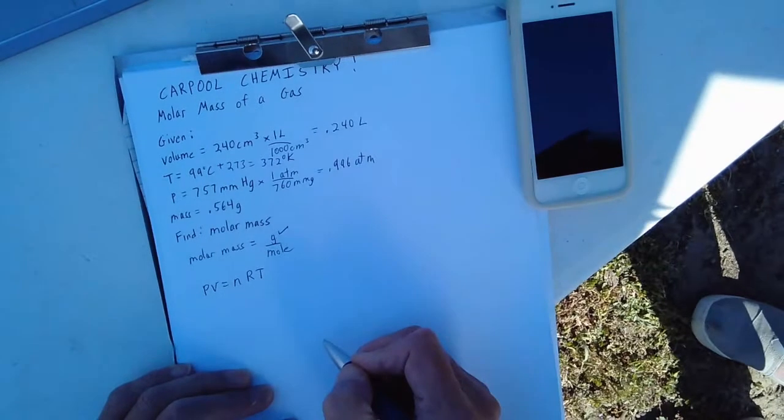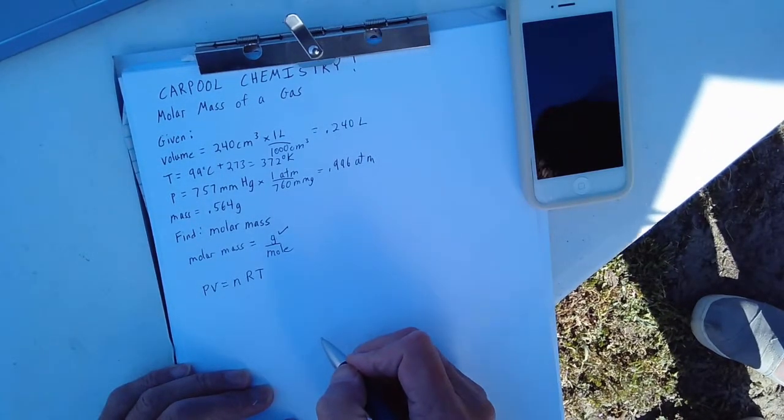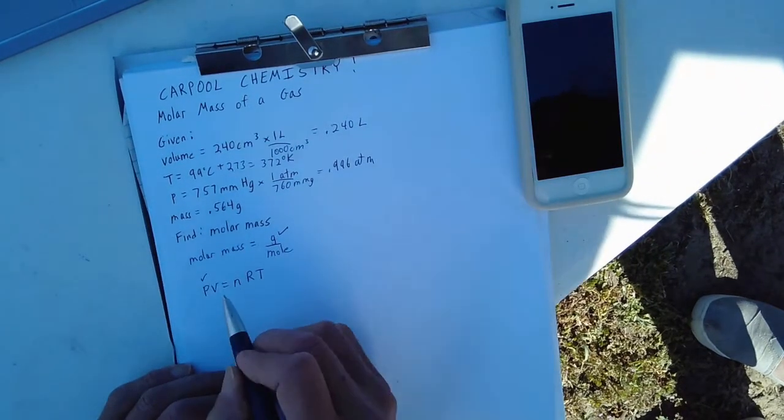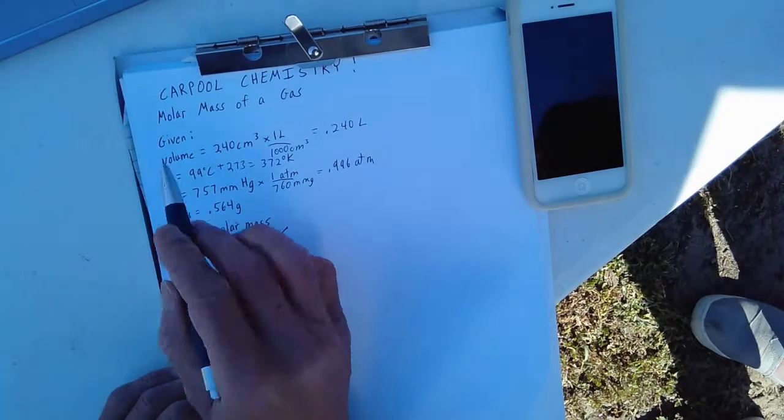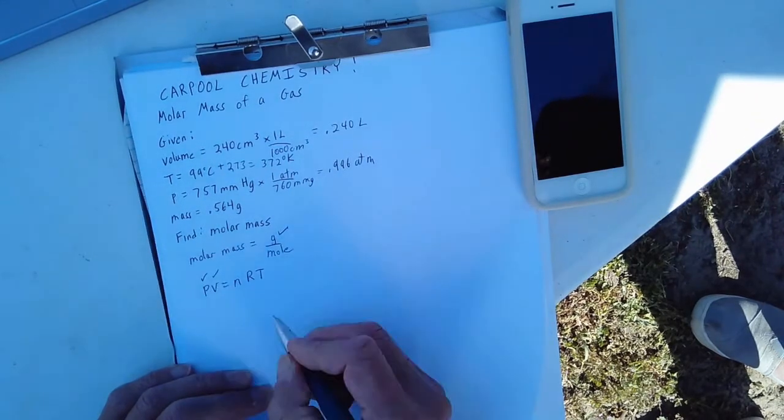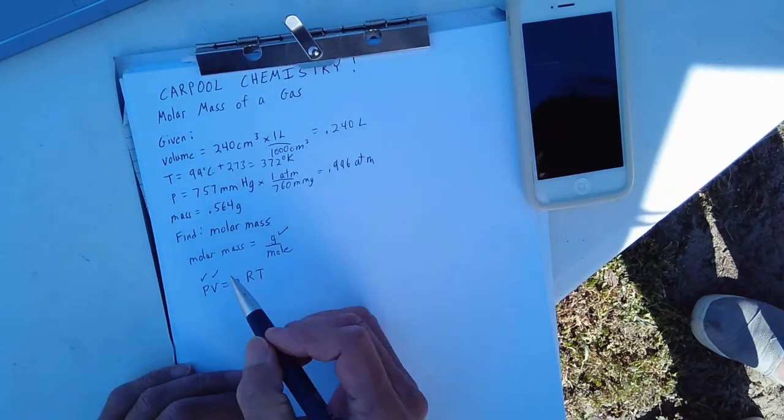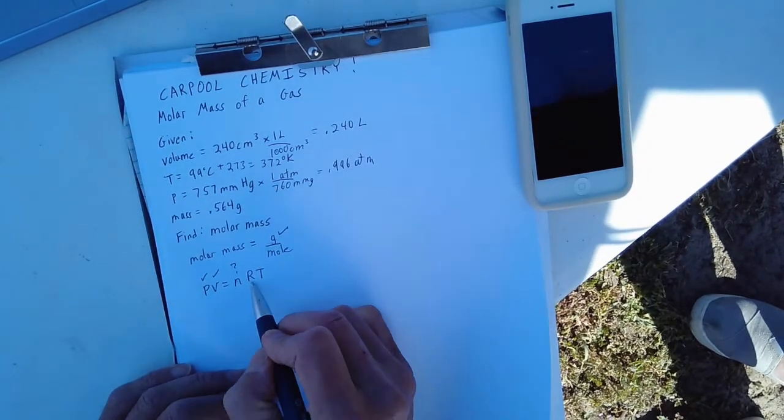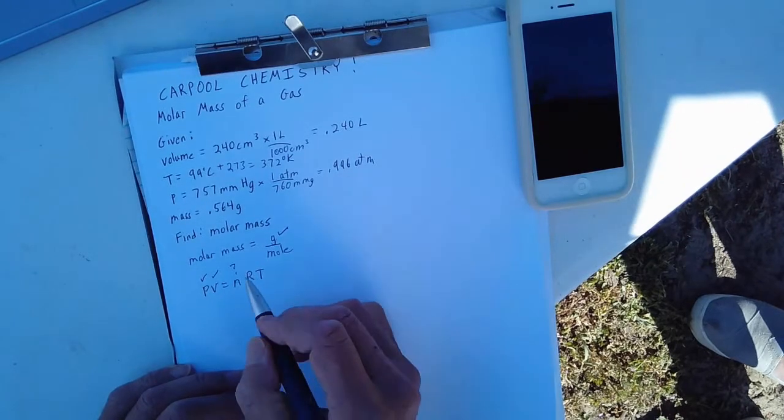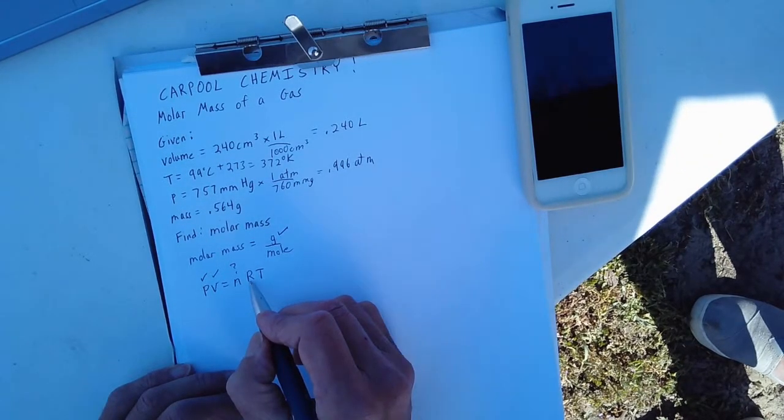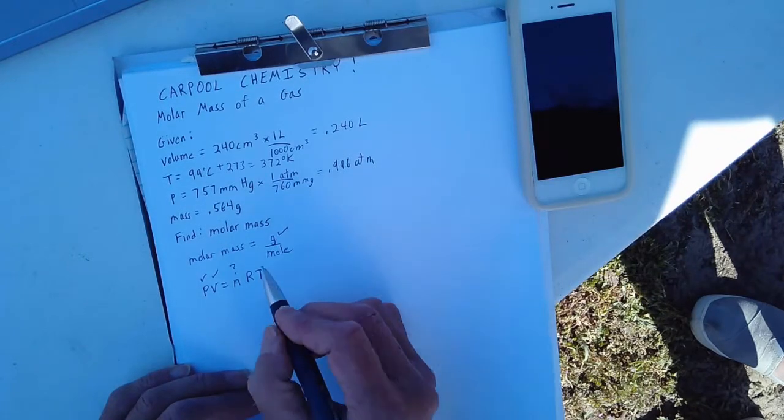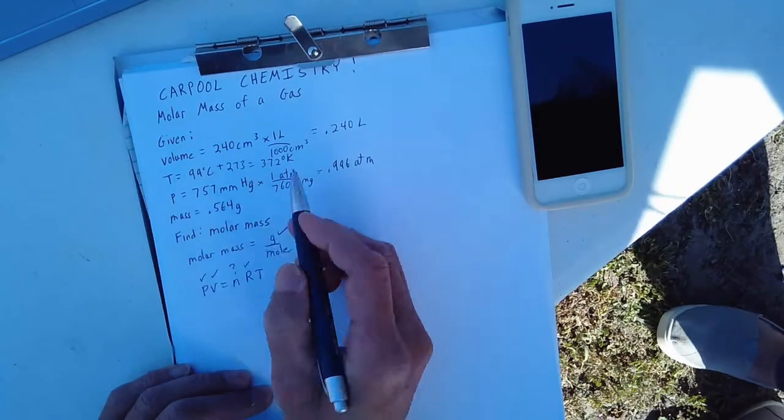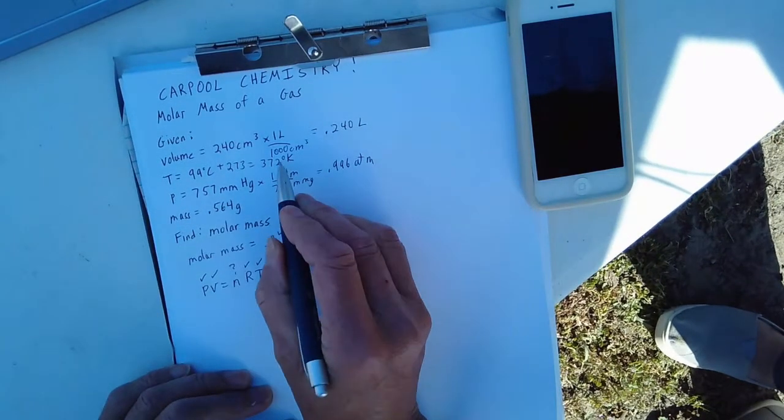Now let's do a checklist to see what we have available to us and what we still need to find. Do we have a value for P? Check. Do we have a value for V? Check. Do we have a value for n, the number of moles? No, we don't. But that's what we really want to find, so we can create a formula. Do we have a value for R? Yes, we sure do. That's a constant, kind of like pi is a constant for circles in geometry. Do we have a value for T? Check. We sure do. And we already put it in Kelvin.